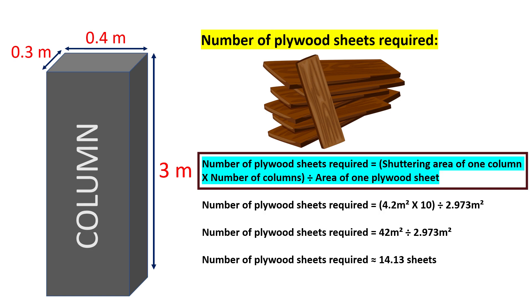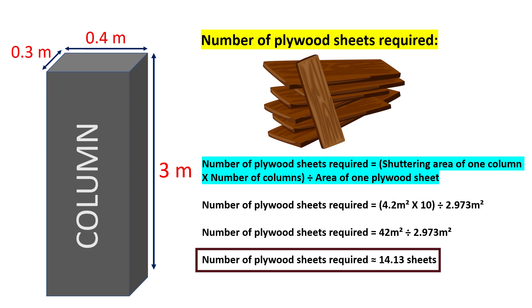On simplifying further, the number of plywood sheets required will be 14.13 sheets. So we would need approximately 15 plywood sheets to cover the shuttering area of 10 columns.